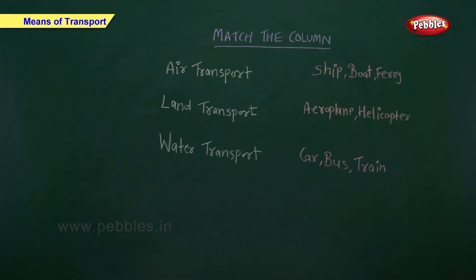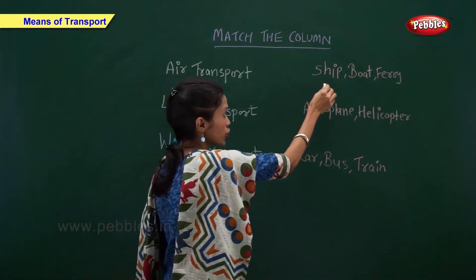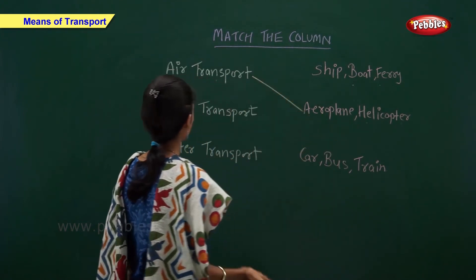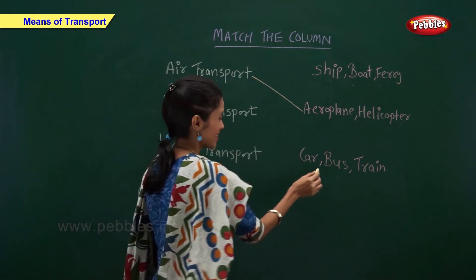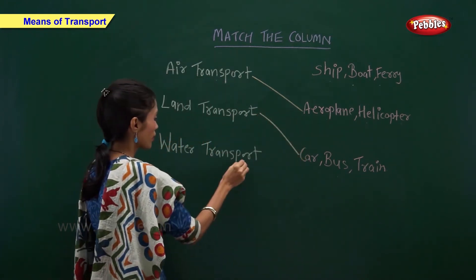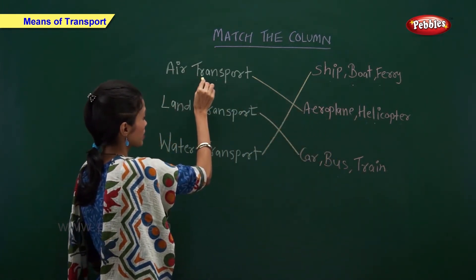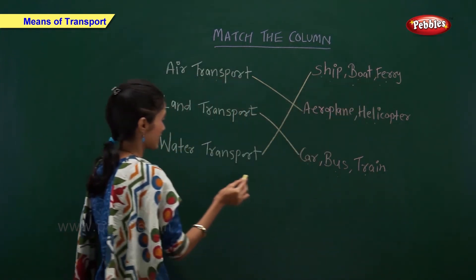Match the column. On one side I have written the types of transport and on the other side I have written their examples. You have to match them. Air transport — aeroplane and helicopter. Land transport — car, bus and train. Water transport — ship, boat and ferry.